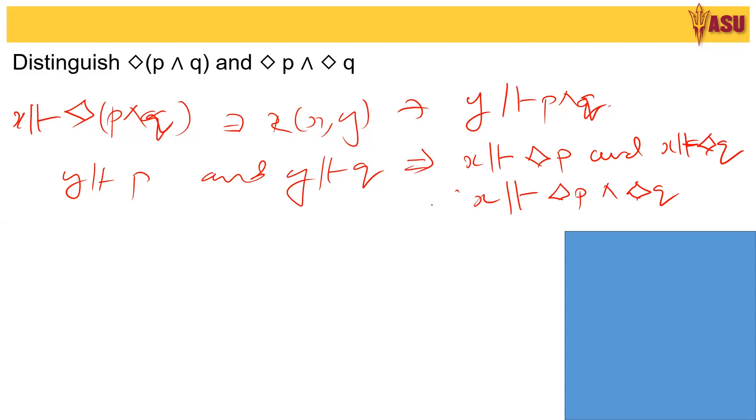Now let us look at the other way around. X belongs to diamond P and diamond Q. This implies there is a rule R belongs to X comma Y prime such that Y prime belongs to diamond P.